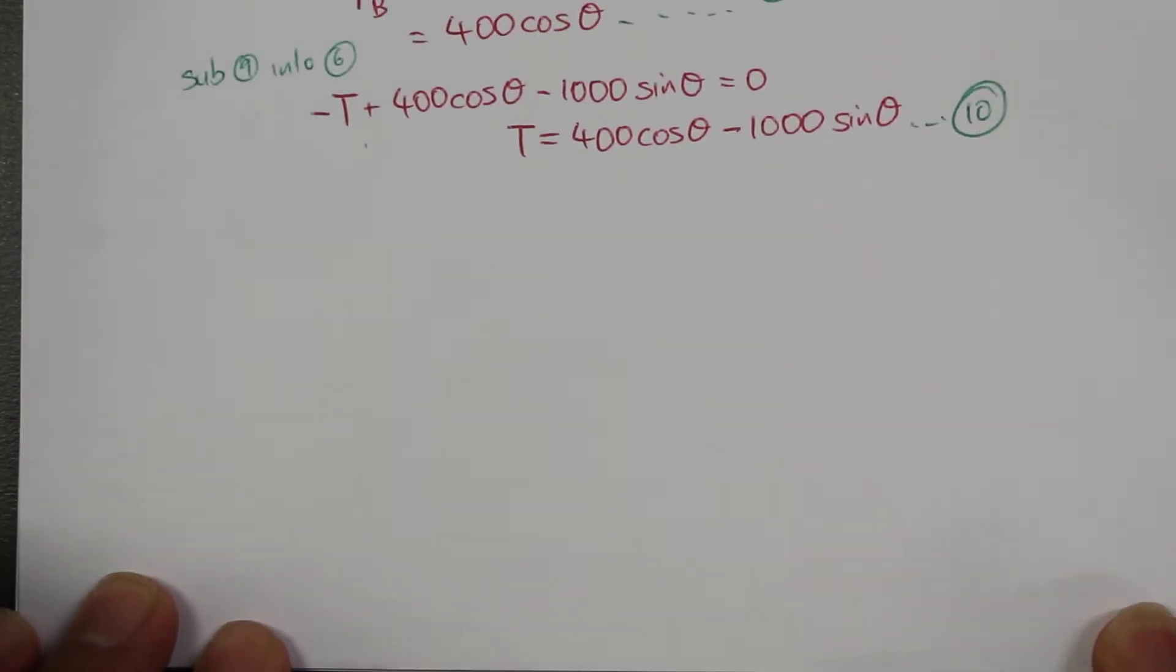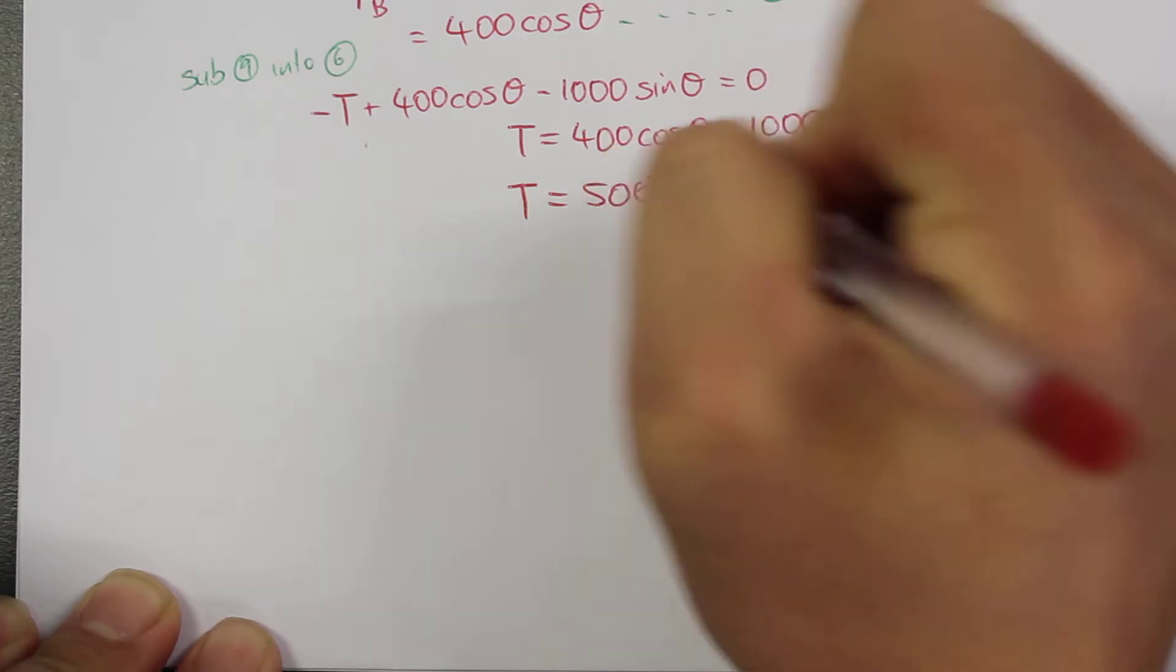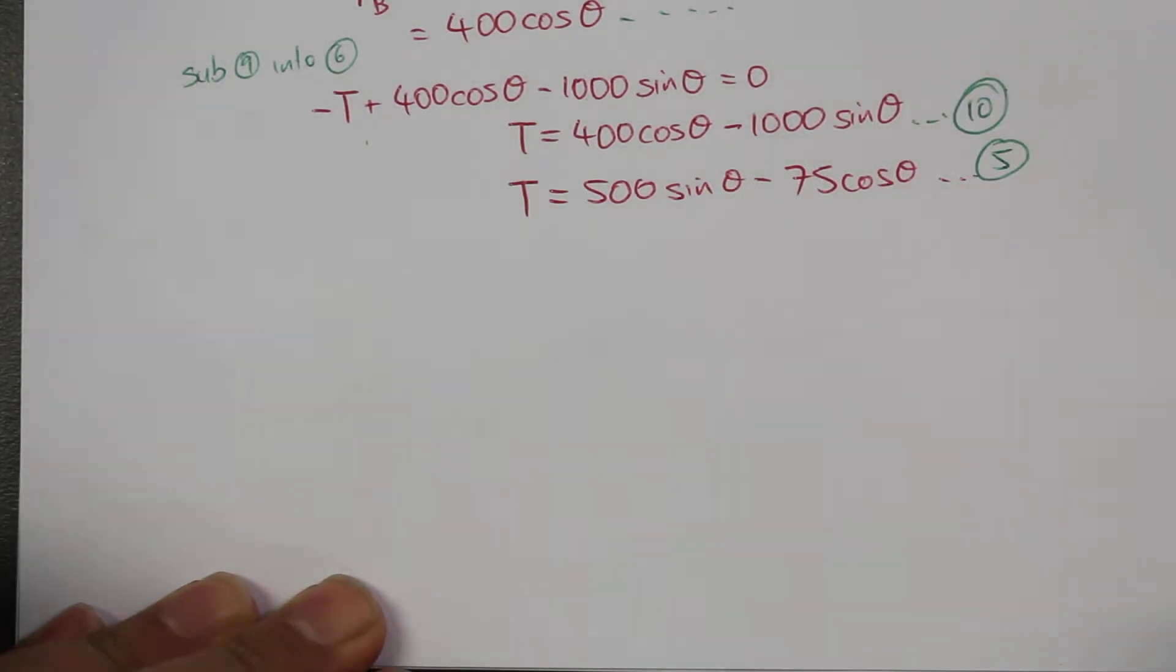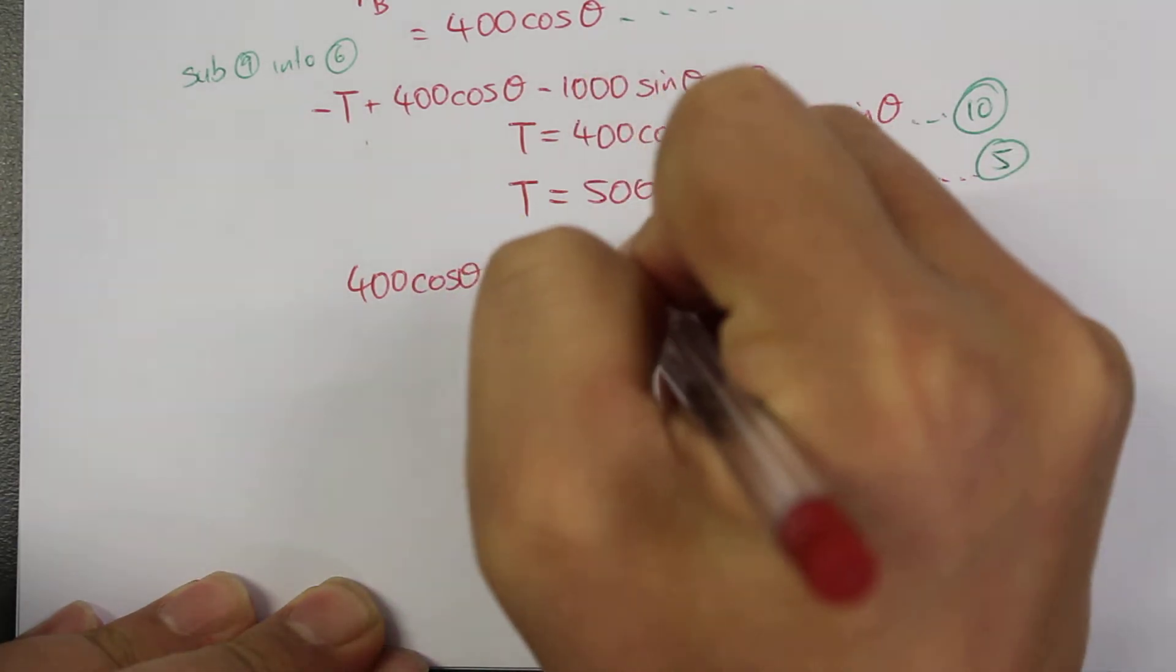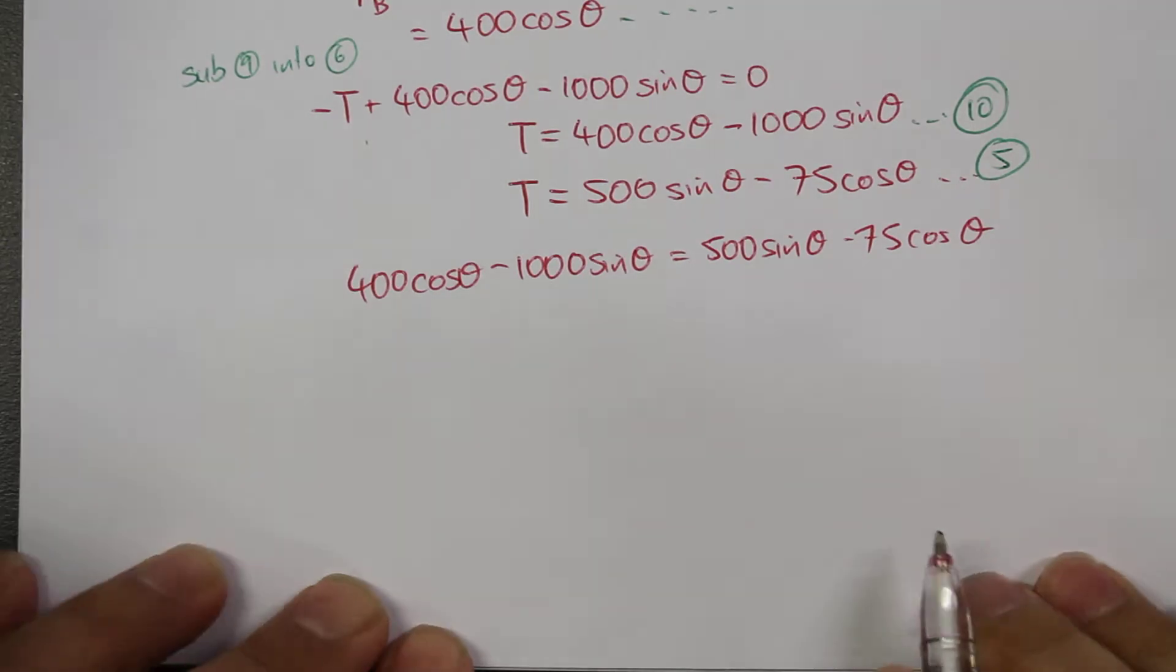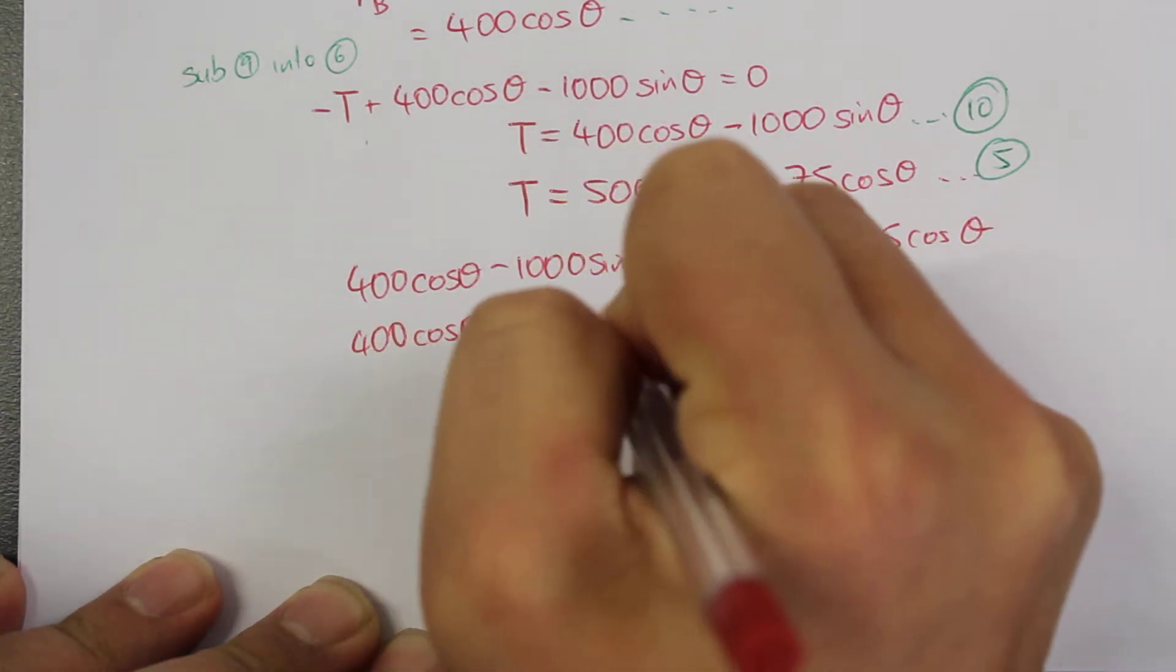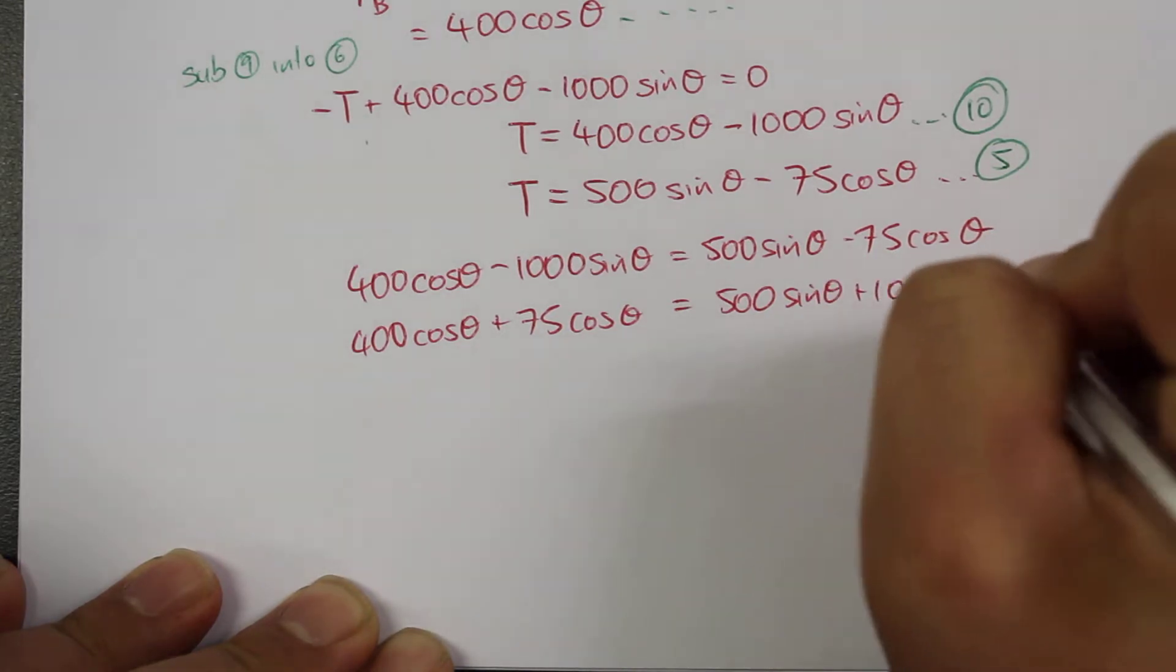I'm just going to write down equation number 5. Equation 5 was T equals 500 times sine theta minus 75 cosine theta. So now what we can do is equate equation number 5 and equation number 10. Next thing is we'll group everything that has a cosine to one side and everything with a sine to the other side.